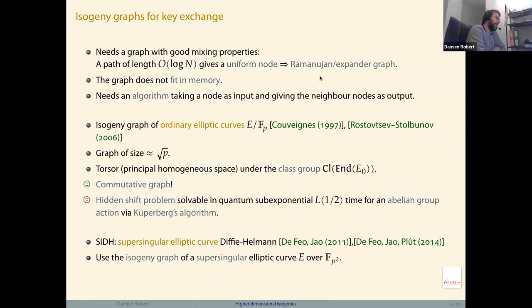The problem with the commutative graph for post-quantum security is that finding a path between two nodes in the quantum setting is an instance of the hidden shift problem, which is solvable in quantum sub-exponential time. Sub-exponential is still hard, but we would like to have exponential quantum security.